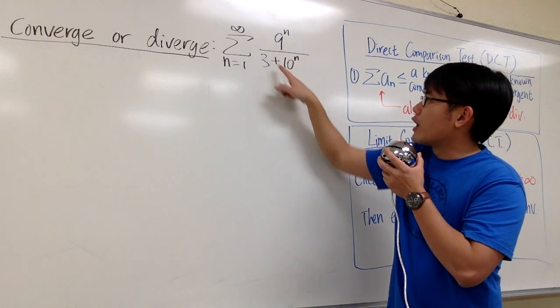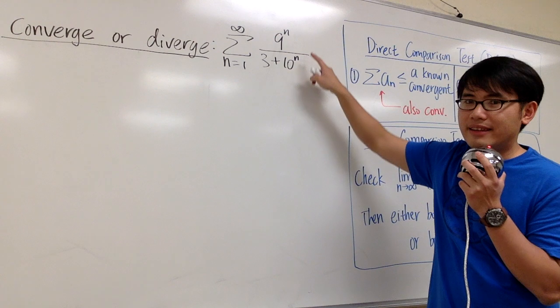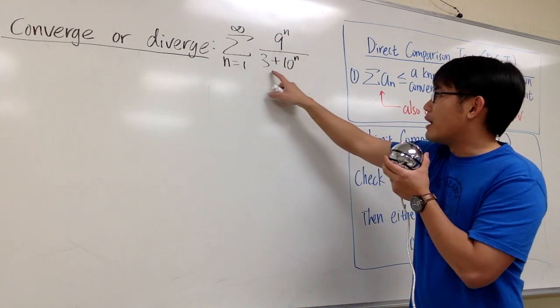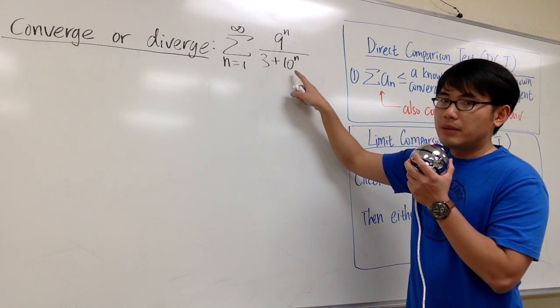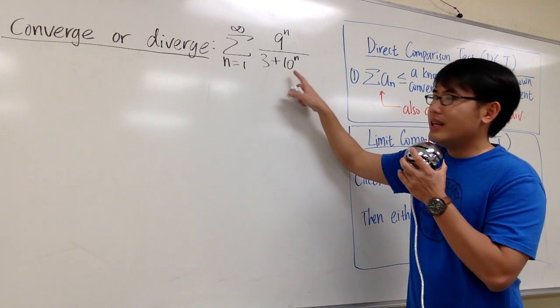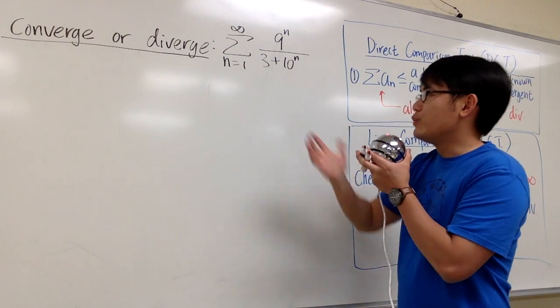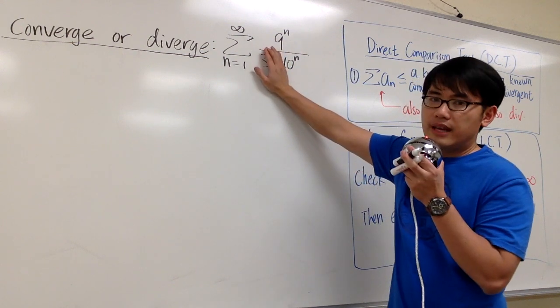Whenever we have a fraction, let's just pay attention to the dominating part on the top and the dominating part on the bottom. The top is just 9 to the n, so there's nothing else. But on the bottom, 3 plus 10 to the n, the 10 to the nth power dominates the 3. In another word, if n goes to infinity, the plus 3 doesn't really matter. And we can just technically look at this as 9 to the n over 10 to the n.